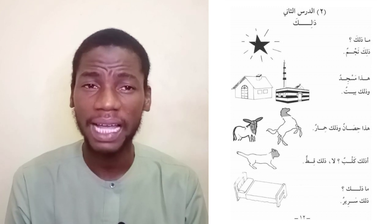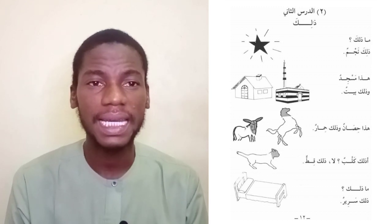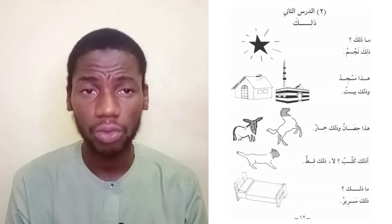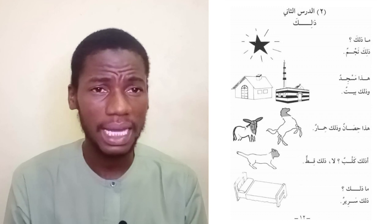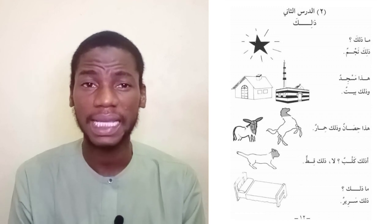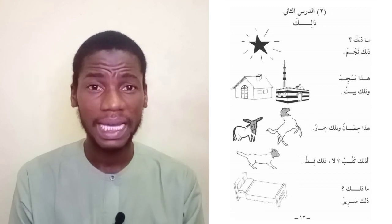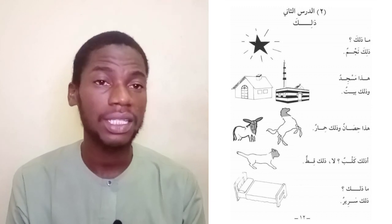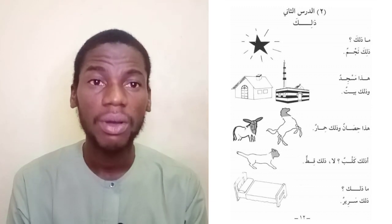'A zalika kalbun?' — is that a dog? 'La' — no. 'Zalika qittun' — that is a cat. So pointing at a cat: 'a zalika kalbun?' — is that a dog? 'La' — no, that is not a dog. 'Zalika qittun' — that is a cat.